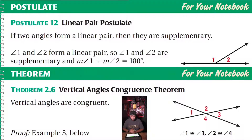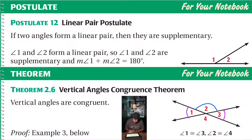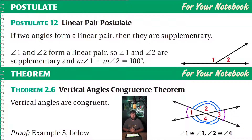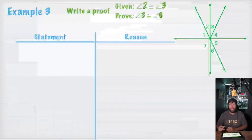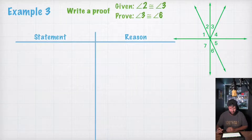Vertical angles congruence theorem: vertical angles are congruent. So what that is saying is that angle 1 is congruent to angle 3 in this picture, and angle 2 is congruent to angle 4. Vertical angles congruence theorem — don't forget that. You're going to use that all the time this year. So let's just keep going.